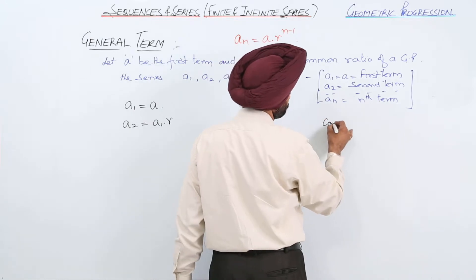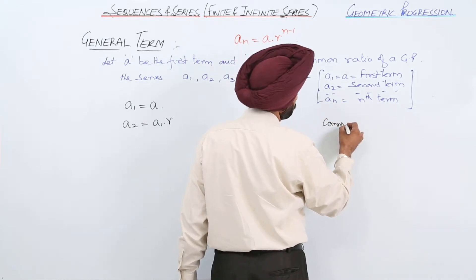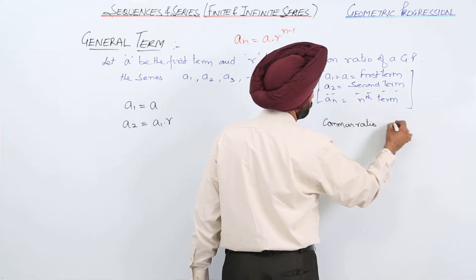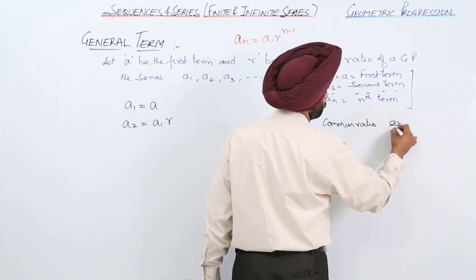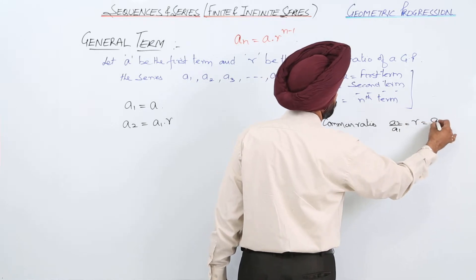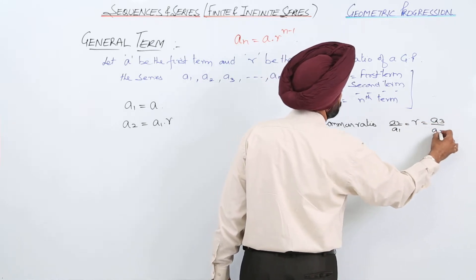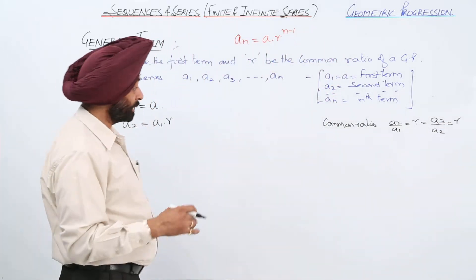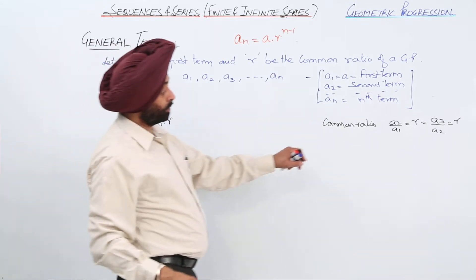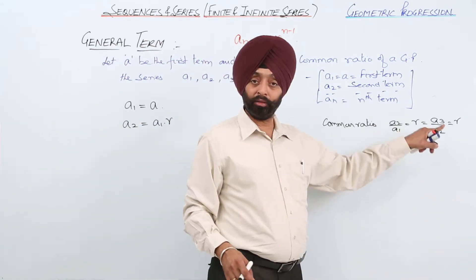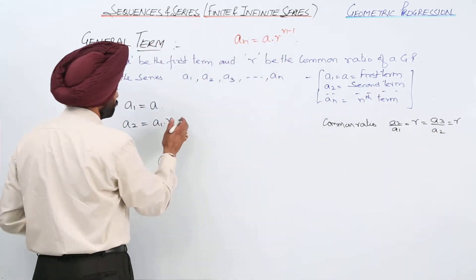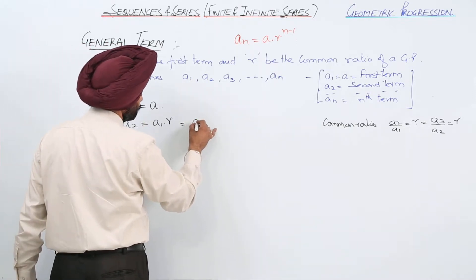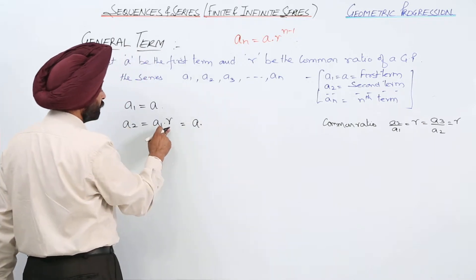Because common ratio. I told you in the definition it is A2 upon A1 equals r, A3 upon A2 equals r, like this, A4 upon A3 is r. So A2 will be what? From here, A2 equals A1 times r. So now A1 is equal to a.